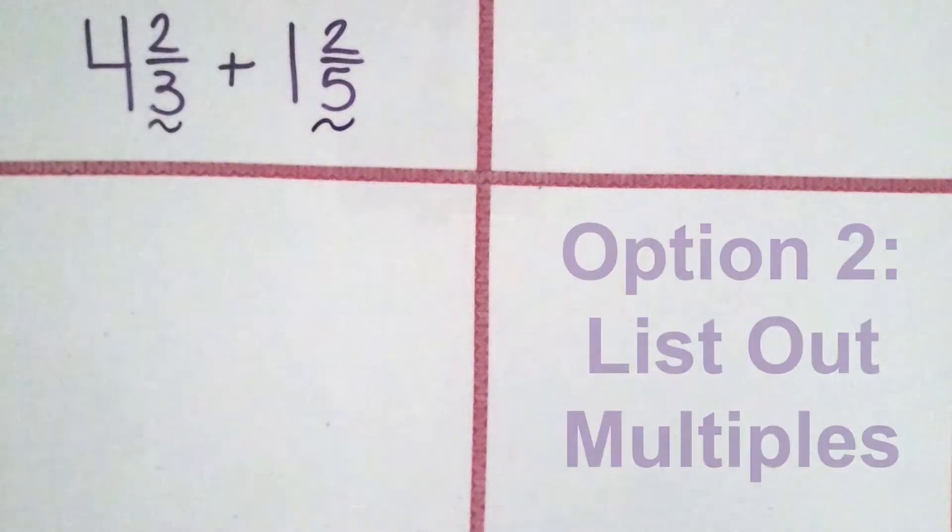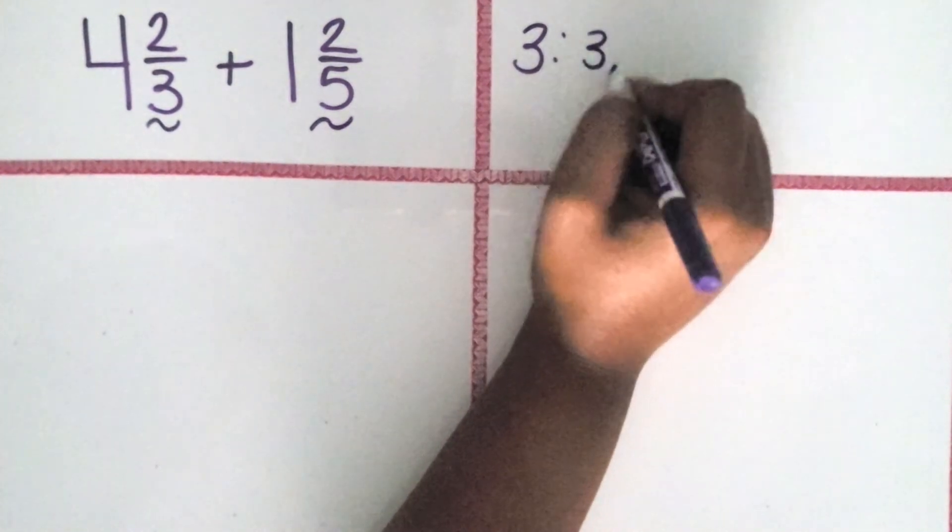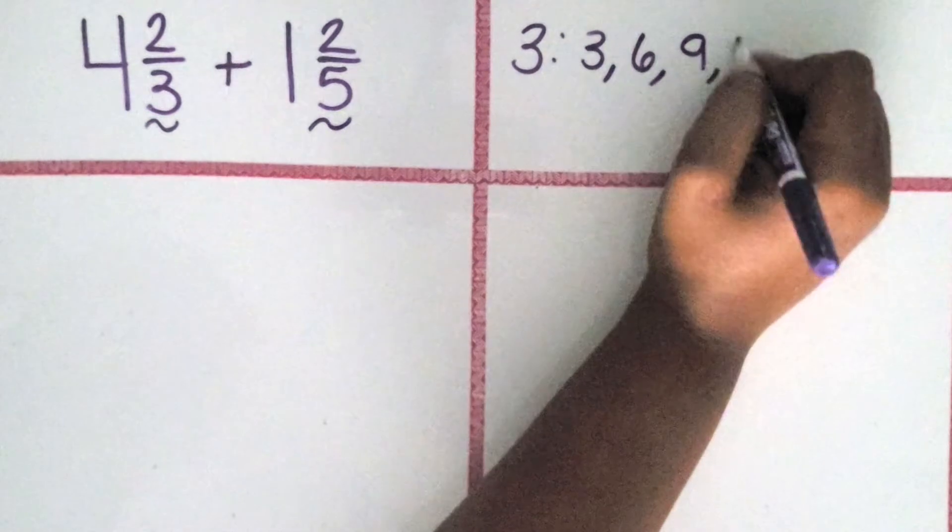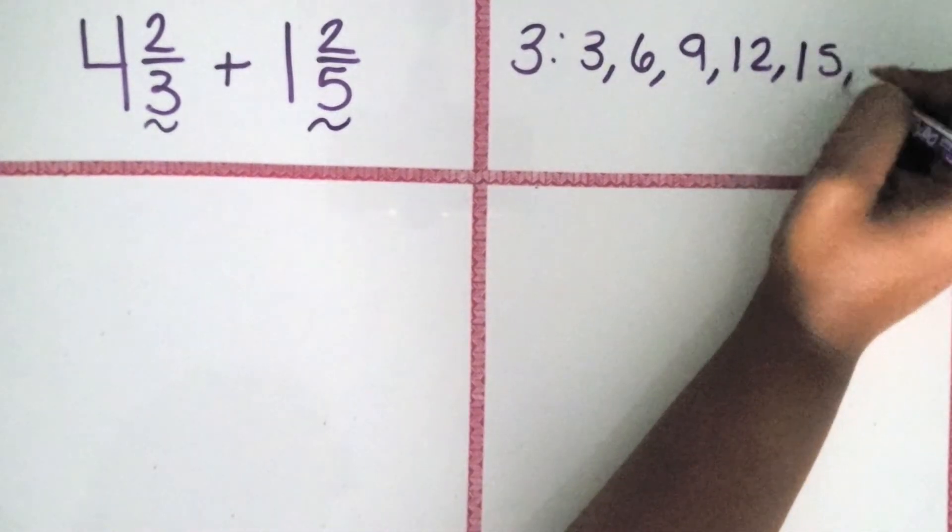Or we can list out some multiples to find which ones they have in common to use as a common denominator. If we list out some multiples of 3, like 3, 6, 9, 12, 15, and 18,